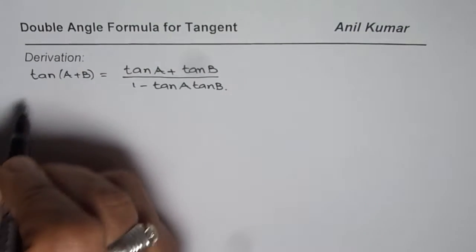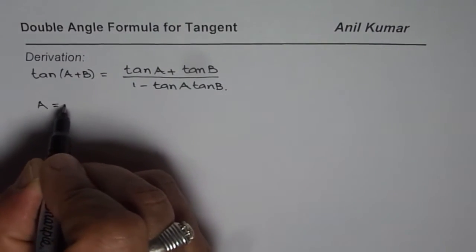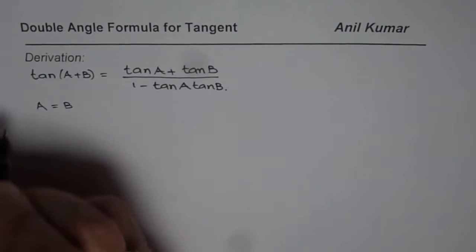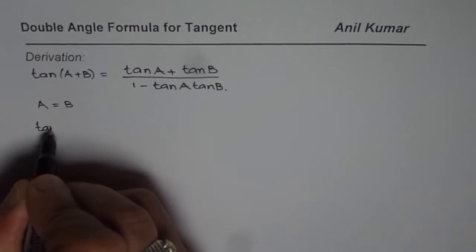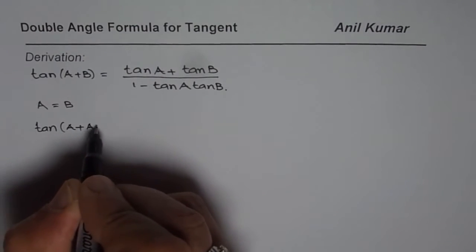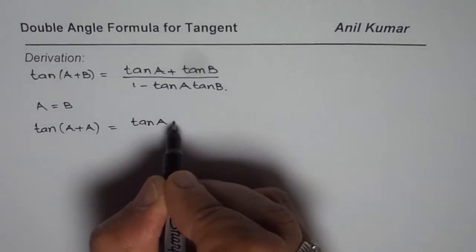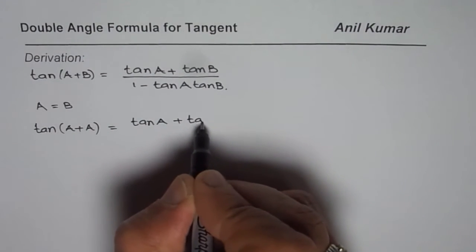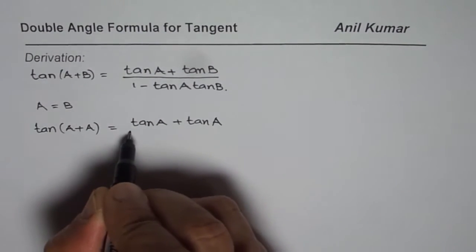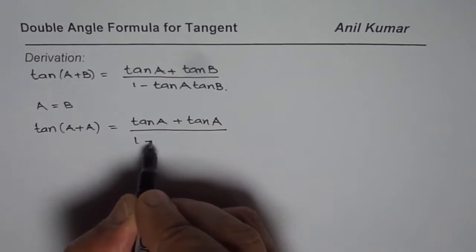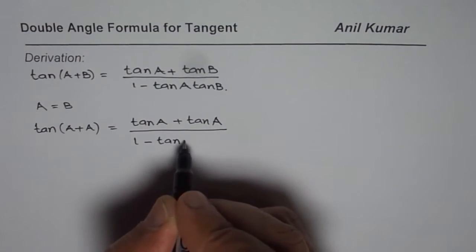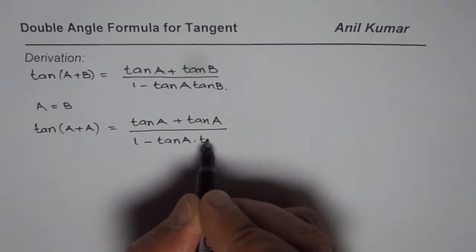Now if I substitute A = B, then what happens? I get tan(A+A) equals tan(A) + tan(A) divided by 1 - tan(A) times tan(A).